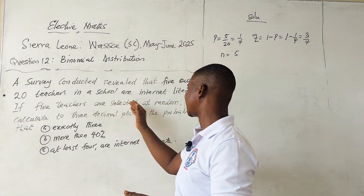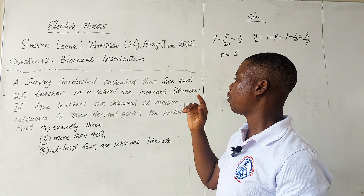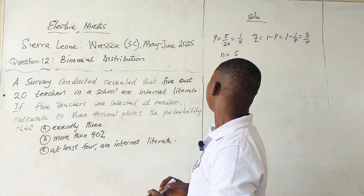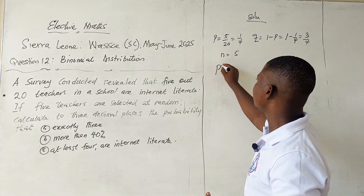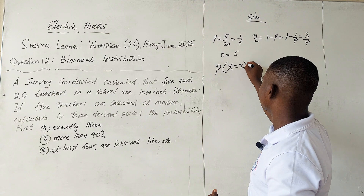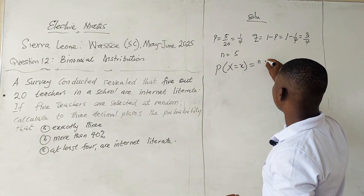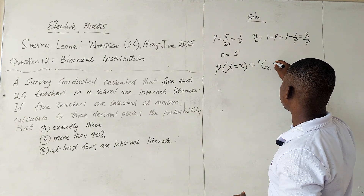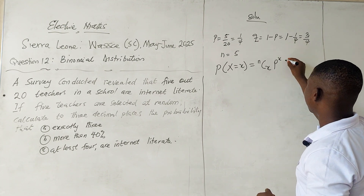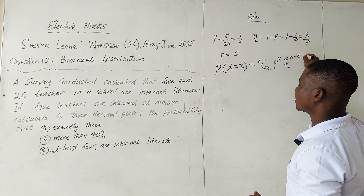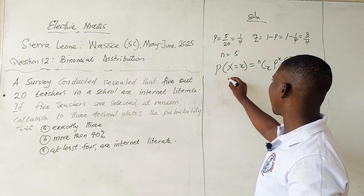We are supposed to find the probability of exactly three. The formula we are going to use is: P(X = x) = nCx × p^x × q^(n-x). This is the formula we are going to use.